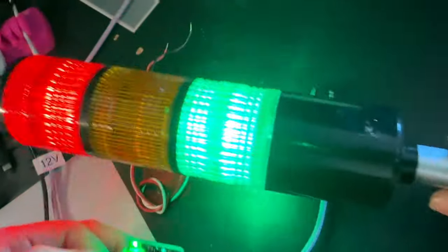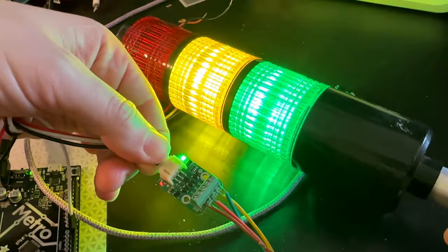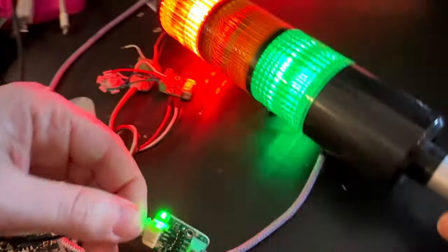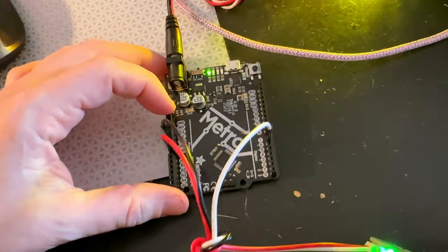And then here is a tower light. These take 12 volts, and there's three channels, and I'm driving it just like it was a NeoPixel, and then I'm powering it from the Metro's 12-volt input here.